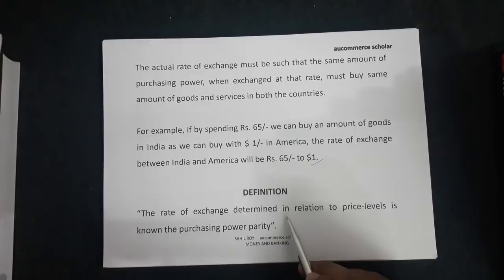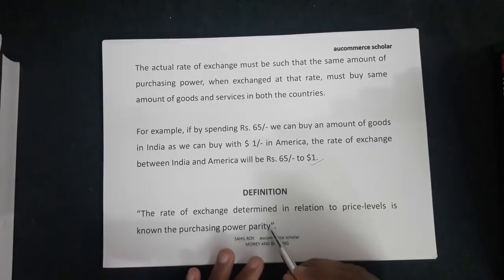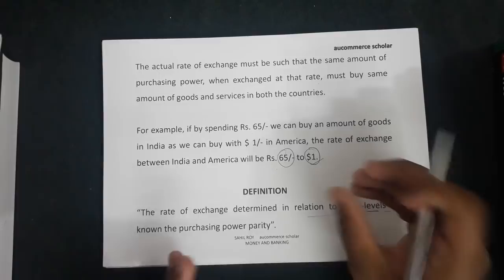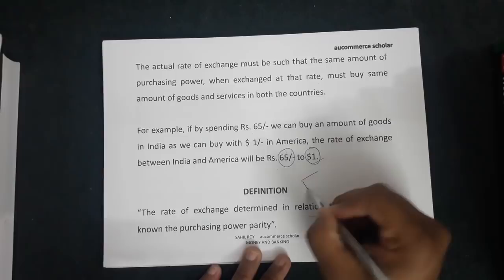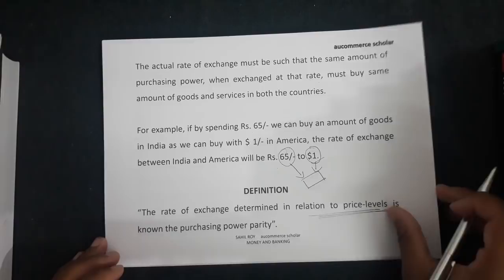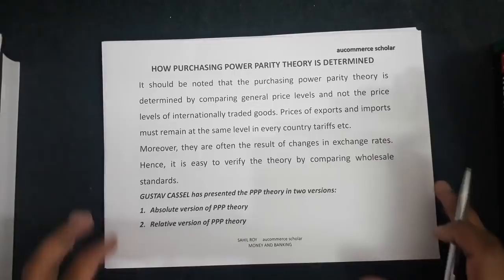The rate of exchange determined in relation to price level is known as purchasing power parity. When we check the price level to determine the exchange rate — comparing 65 rupees and one dollar — we determined that 1 dollar equals 65 rupees. This is about price level: to buy any one item, you paid 1 dollar in America and 65 rupees in India.